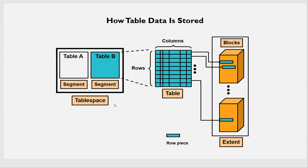What that means is how the data is stored inside the blocks of a tablespace. As I already explained, data will be stored as blocks — it's an 8K block by default. A combination of blocks makes an extent, a combination of extents makes segments, and a combination of segments makes a tablespace. Then the combination of tablespaces makes the database.